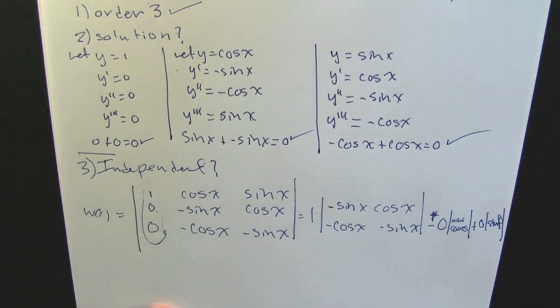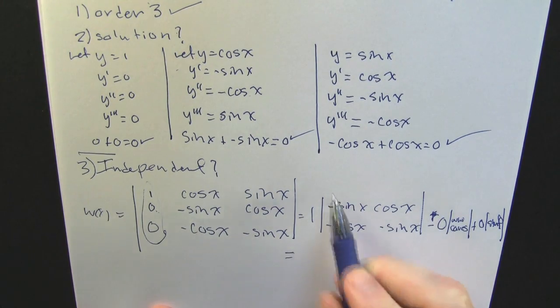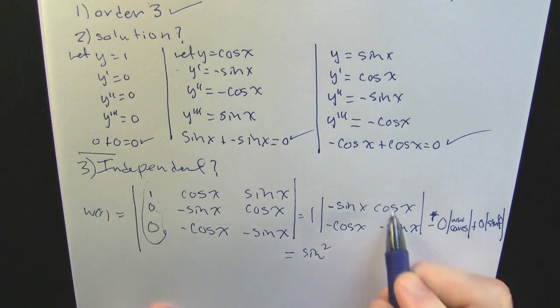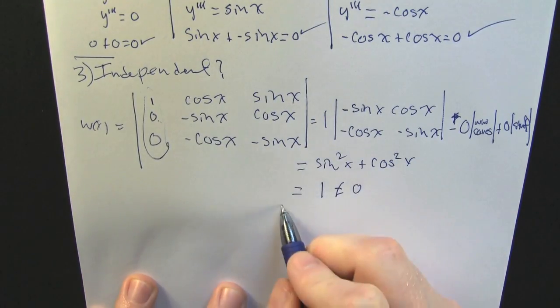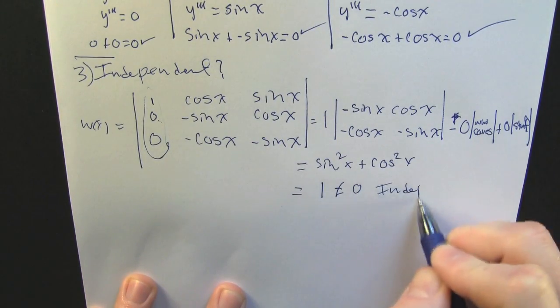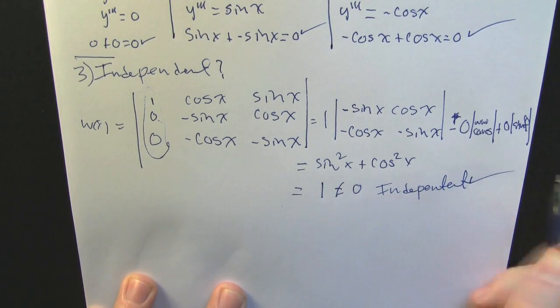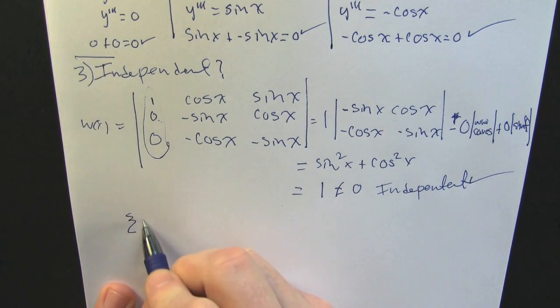Finally, after that, he takes the determinant of that two by two, and it appears it's going to be sine squared plus cosine squared. That's the trigonometric identity—it's one, aka not zero, thus independent, satisfying all three properties or conditions for a fundamental solution set.